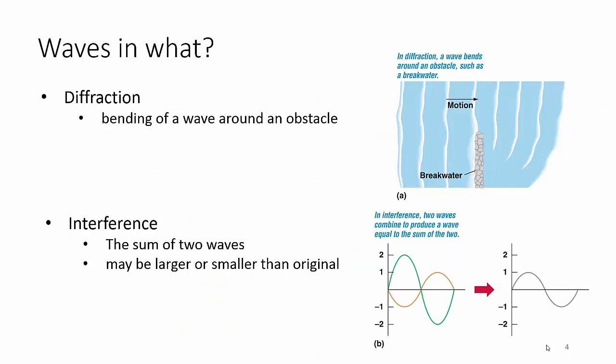Waves interact with each other in two main ways. The first is diffraction — if there's an obstacle in the way, a wave can actually bend around it. Since we live near Tampa, go out on a pier — even down at the Manatees where there's a pier — and you can see waves coming in and bending around it.